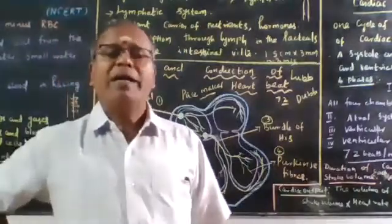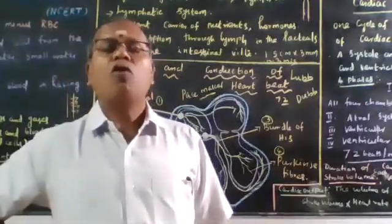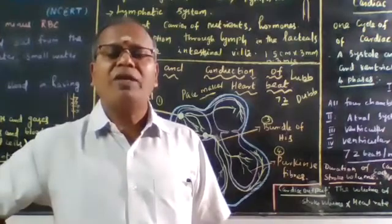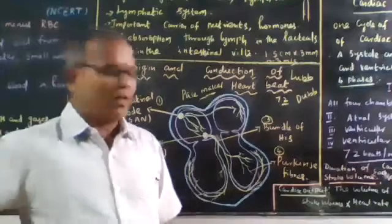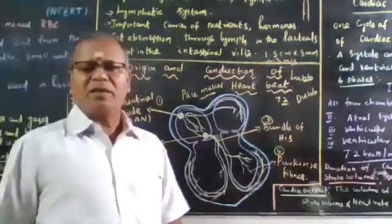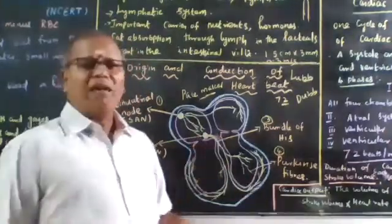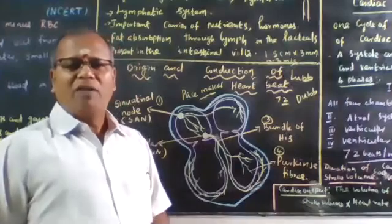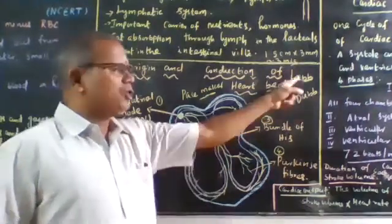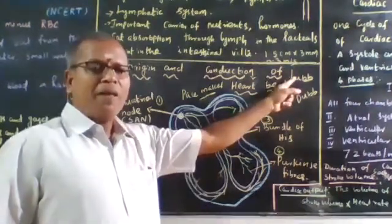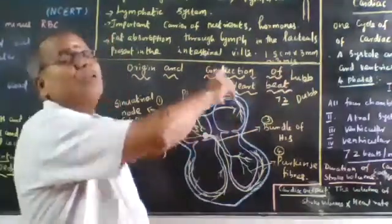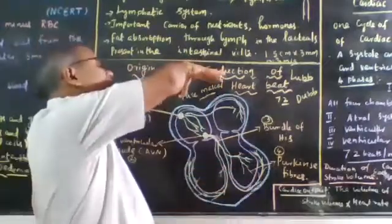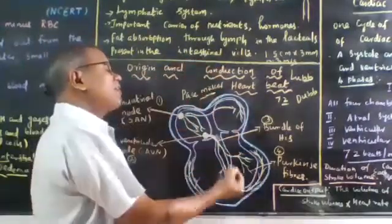Lub is a long and dull sound caused by the closure of atrioventricular valves - tricuspid and bicuspid. Dub is a short and sharp sound caused by the closure of semilunar valves when the atria undergo contraction and ventricles undergo relaxation.